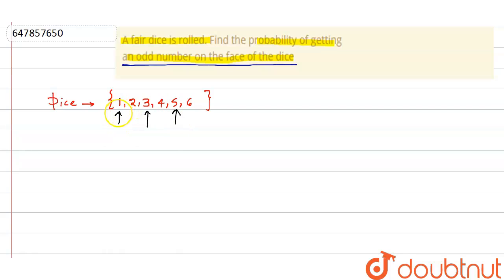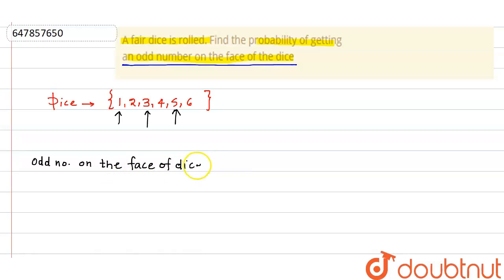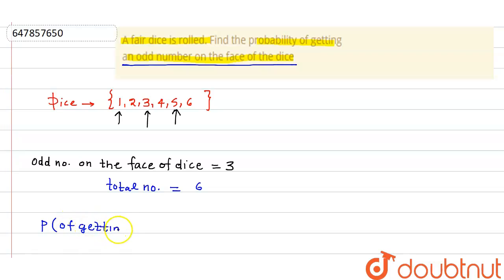The total odd numbers written on the face of the dice are three: that is one, three, and five. The total numbers written on the face of the dice are six. So the probability of getting an odd number equals three over six, which simplifies to one by two.